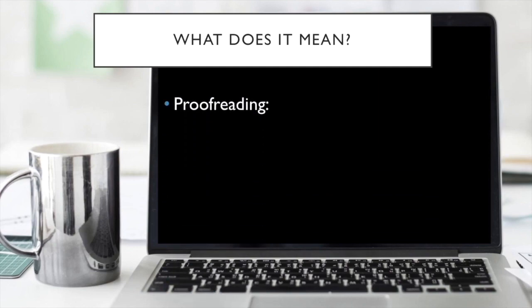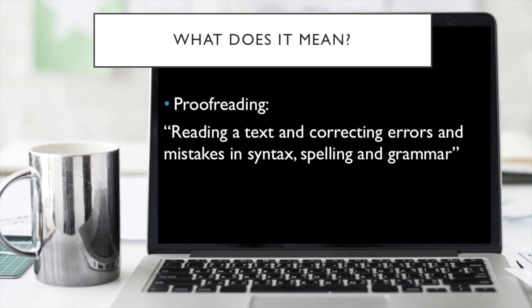Now, in terms of proofreading, what is proofreading? Proofreading is reading a text and correcting errors and mistakes in syntax, spelling and grammar. By and large, this is what your teacher used to do when correcting your essays. This is also what Microsoft Spellcheck does. This will be correcting all the errors you see and the mistakes.